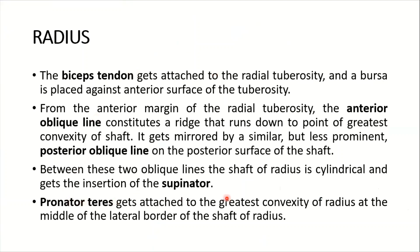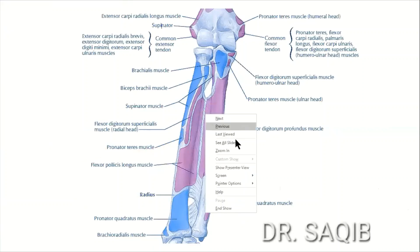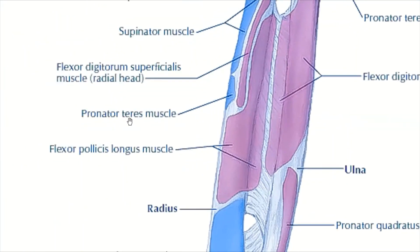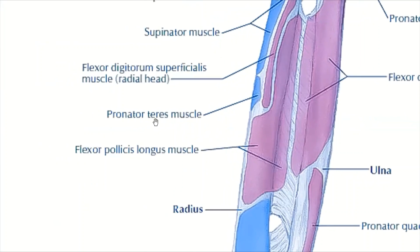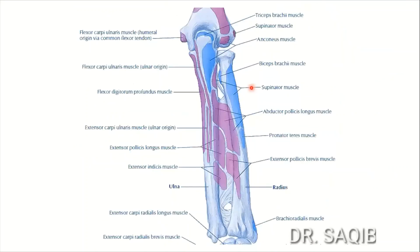Pronator teres gets attached to the greatest convexity of the radius at the middle of the lateral part of the shaft. Here you can see the pronator teres muscle attachment on the radius in both anterior and posterior views.